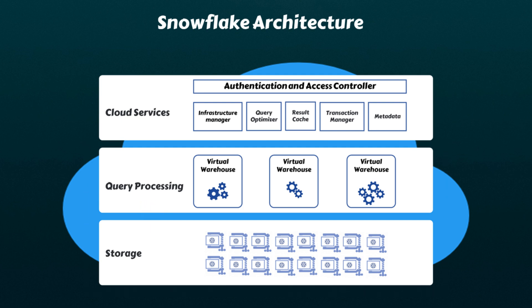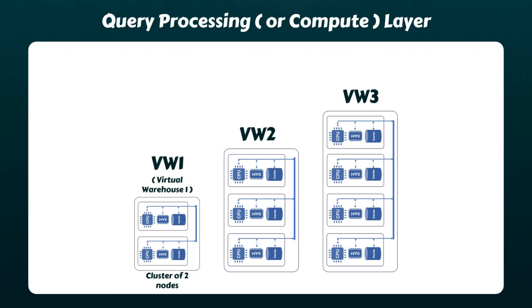The compute layer of Snowflake primarily consists of one or more virtual warehouses. You can imagine each virtual warehouse as a shared-nothing MPP compute cluster. For instance, virtual warehouse one here is essentially a cluster of two nodes. It's worth noting that these nodes are provisioned by the underlying cloud service provider — for instance, if you've set up your Snowflake account on AWS, then these nodes are most likely EC2 instances behind the scenes.